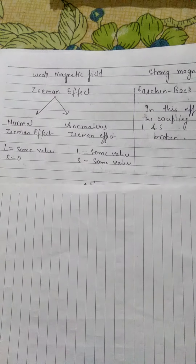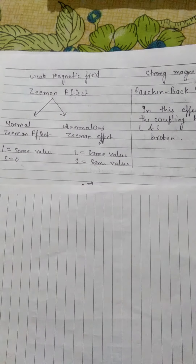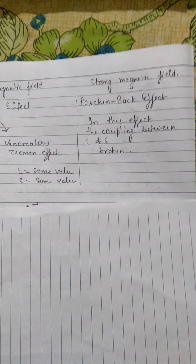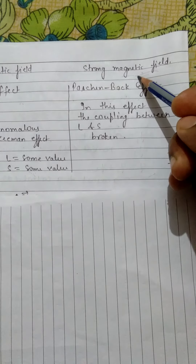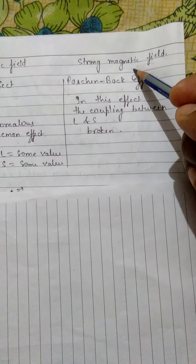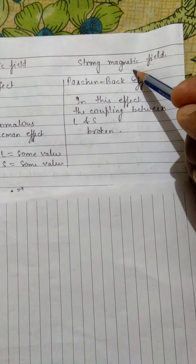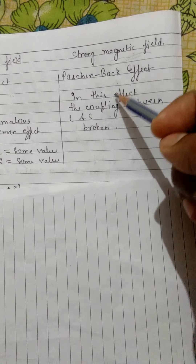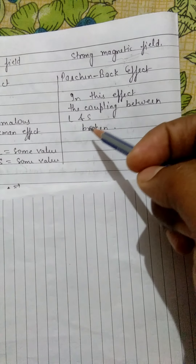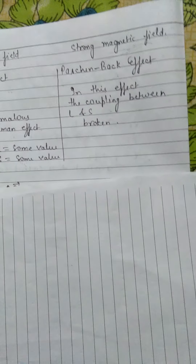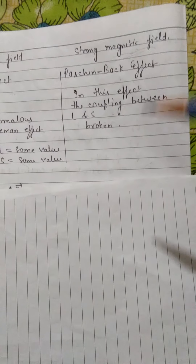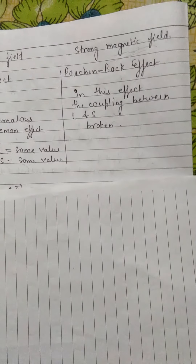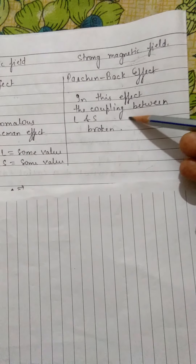तो वो जो internal force है, अगर उसके अपेक्षा जो बाहरी magnetic field है उसके वजह से जो force लग रहा है — जैसा कि Paschen-Back effect में ज्यादा है बाहरी वाला — तो electron के orbital motion वाले से ज्यादा है। इसलिए L और S दोनों में जो coupling है वो टूट जाती है, वो break हो जाता है। इसके वजह से एक नया case generate होता है जो Paschen ने बताया था।